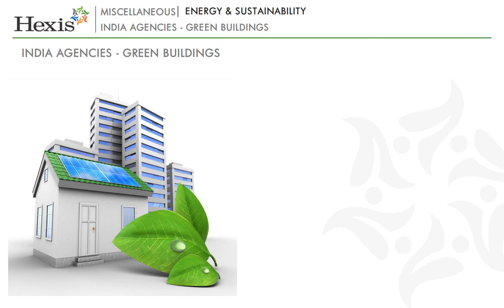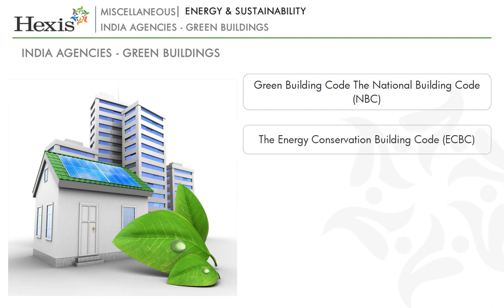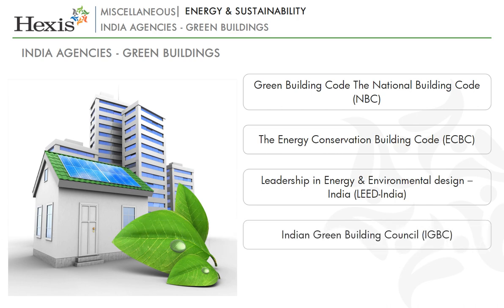Lastly, let us look at the various Indian agencies that work towards energy and sustainability. The Green Building Code is a medley of codes and standards contained in state by-laws, including the National Building Code (NBC), the Energy Conservation Building Code (ECBC), and norms set by rating programs such as Leadership in Energy and Environmental Design (LEED), the India Green Building Council (IGBC), and GRIHA.